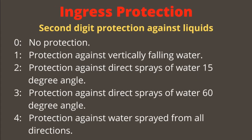6 is complete protection from dust. The second digit of IP — protection against liquids: 0 is no protection; 1 is protection against direct falling water; 2 is protection against spraying water at a 15-degree angle from the vertical.